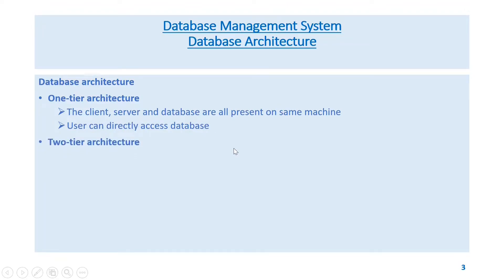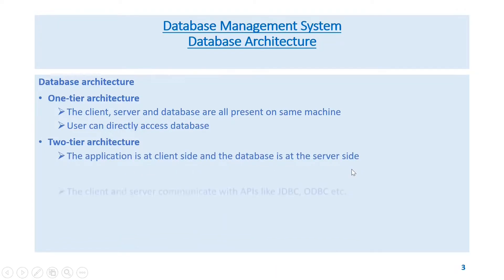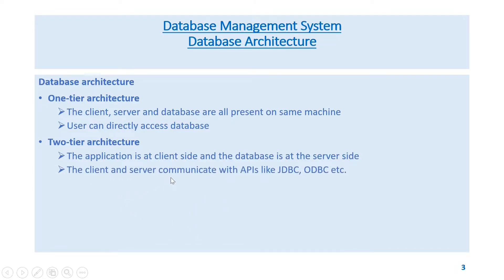Two-tier architecture: The application is at the client side and the database is at the server side. The client and server communicate with APIs like JDBC, ODBC, etc.